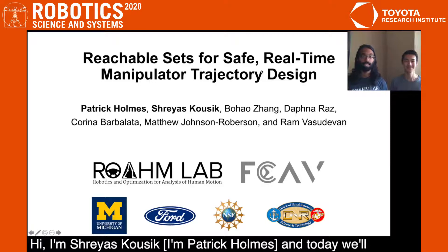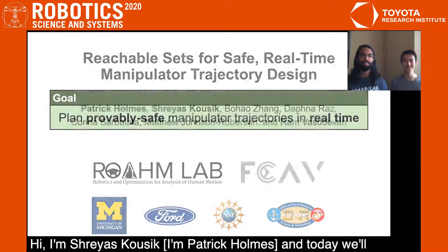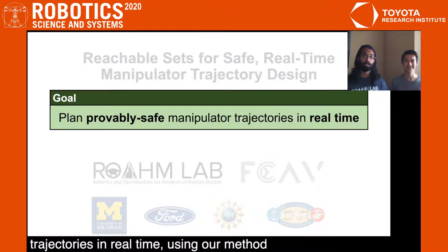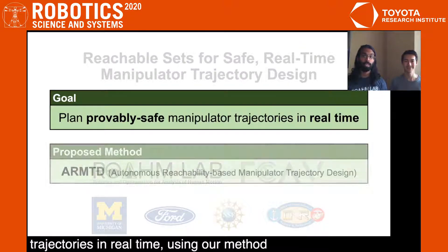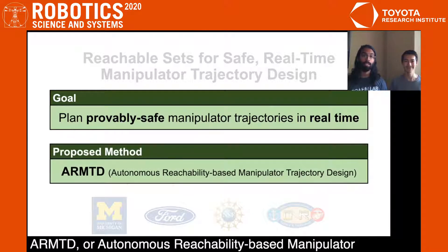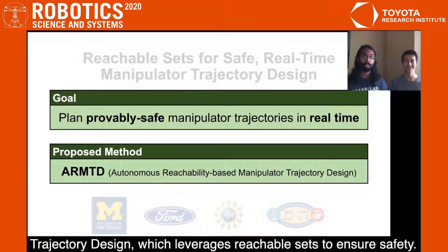Hi, I'm Shreyas Kausik. I'm Patrick Holmes. And today we'll be talking about how to plan provably safe manipulator trajectories in real time using our method ARMTD, or Autonomous Reachability-Based Manipulator Trajectory Design, which leverages reachable sets to ensure safety.